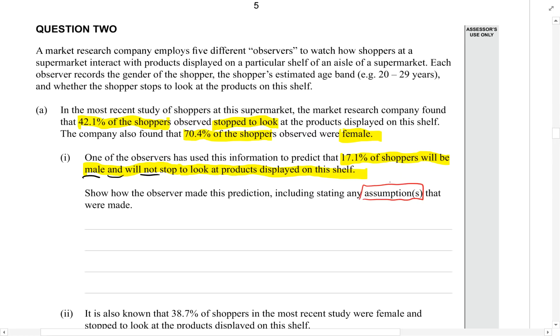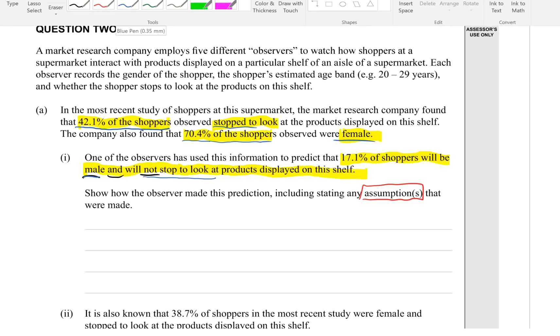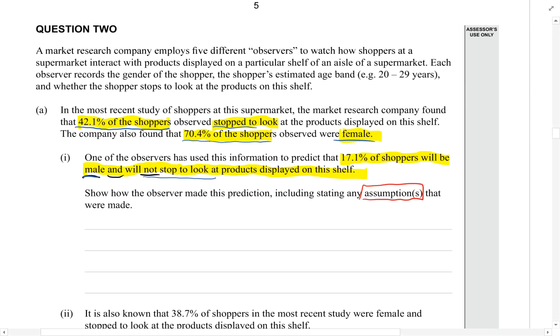So how would they have got that figure of 17.1%? It must be based on the information given. The only statistics we've been given are the 42.1% stopped to look and 70.4% were female. And the claim of 17.1% is about males and not stopping to look. So if we simply based it on those two figures, how might they have arrived at that?